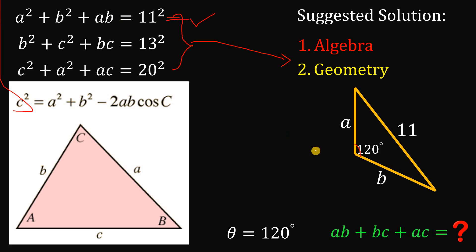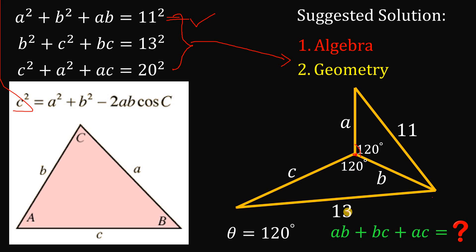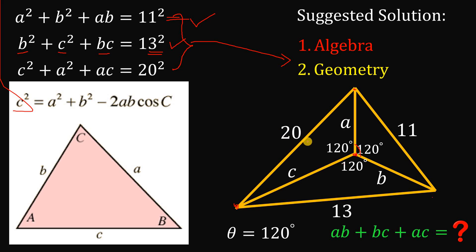From this point, let's make another segment and call it C. Connecting the endpoints with another 120-degree angle, the opposite side equals 13. Using the cosine law on this second triangle gives B squared plus C squared plus BC equals 13 squared. And connecting the remaining two points — calling that side 20 — and applying the cosine law gives the third equation: C squared plus A squared plus AC equals 20 squared.